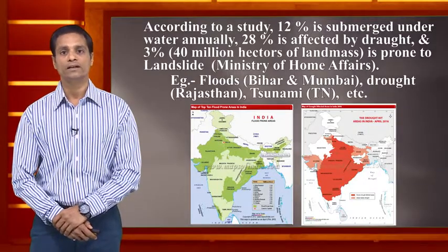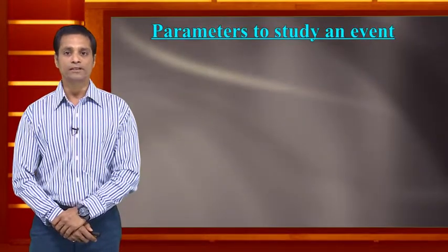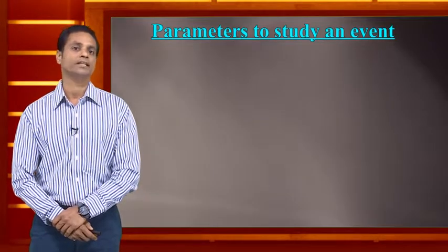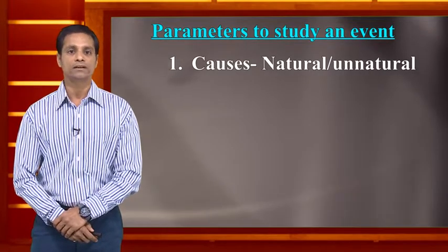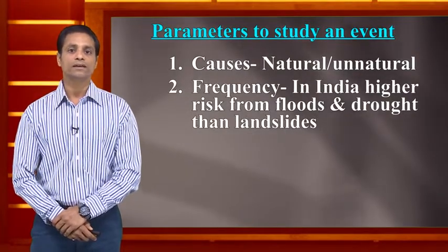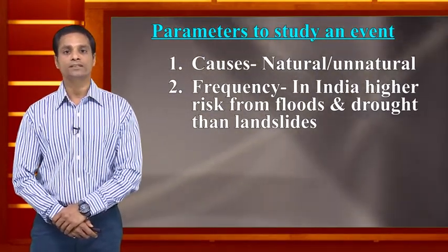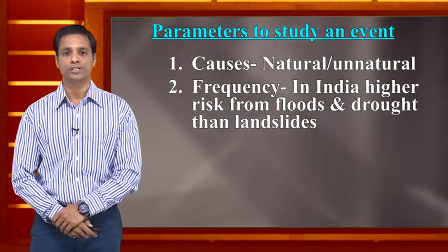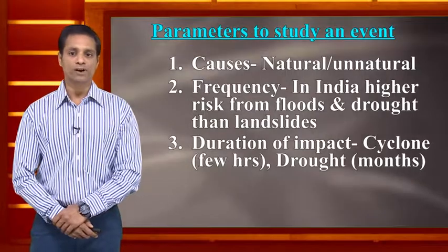Four parameters can be used to study an event. First, the root cause — whether it is a natural or man-made disaster. Second, the frequency or risk: flooding risk in India is much higher compared to drought. Third, the duration of impact — which can last for a few hours or prolong for months or a year.